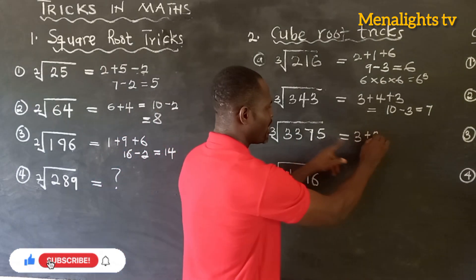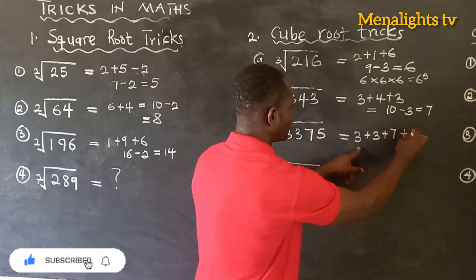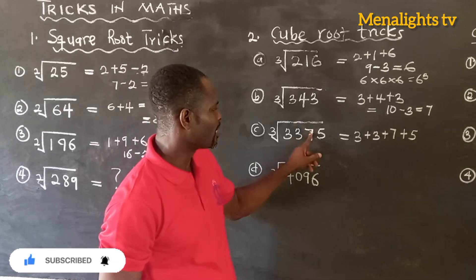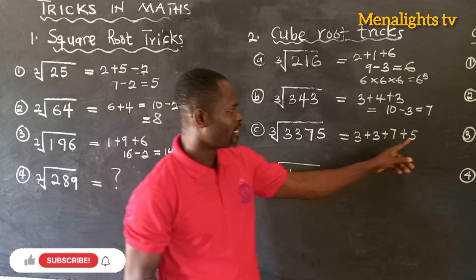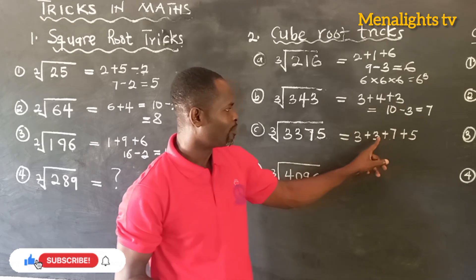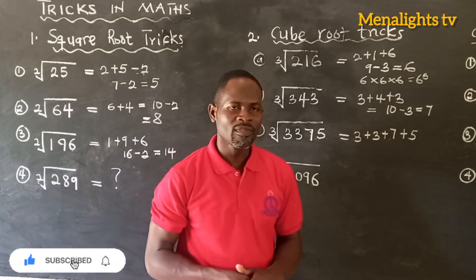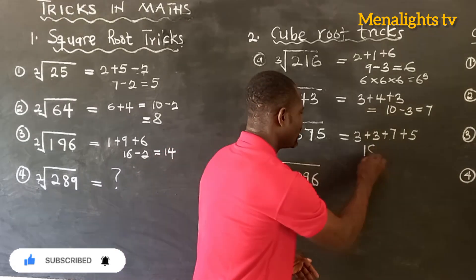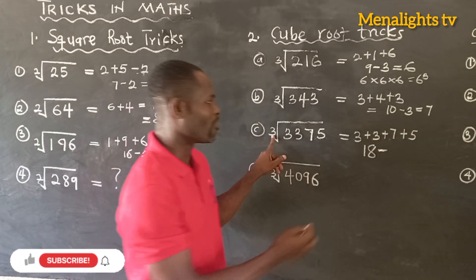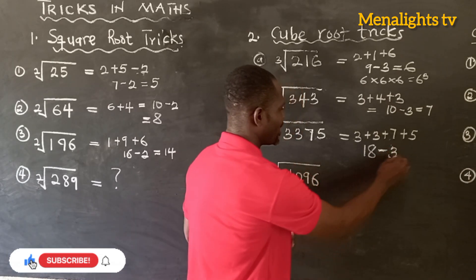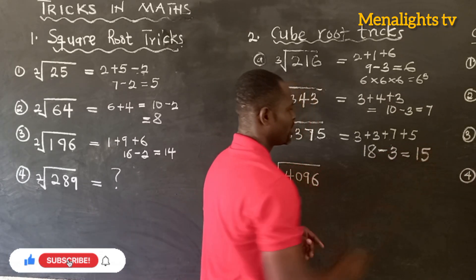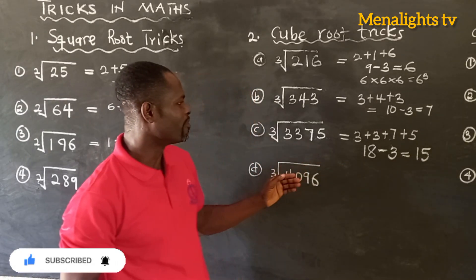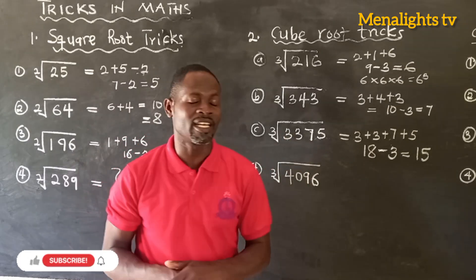Now for the cube root of 3,375: we have 3 plus 3 plus 7 plus 5, which gives us 18. So 18 minus 3 gives me 15, which means that the cube root of 3,375 is 15.